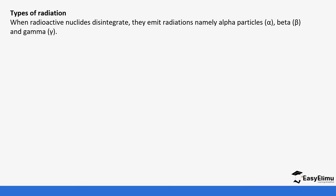Radioactive nucleides disintegrate and usually emit radiations. The examples of radiation we have: the alpha particle, which is represented by this sign; beta, which is represented by this sign; and gamma, which is represented by this sign. Make sure you are able to remember which represents what.